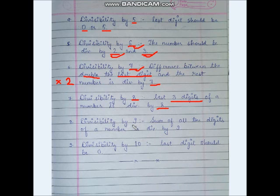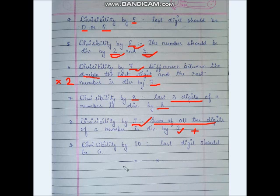Divisibility by 9: similar to divisibility by 3, we find the sum of all the digits of the given number. Then we check whether that sum is divisible by 9. If it is divisible by 9, then the original number is also divisible by 9.